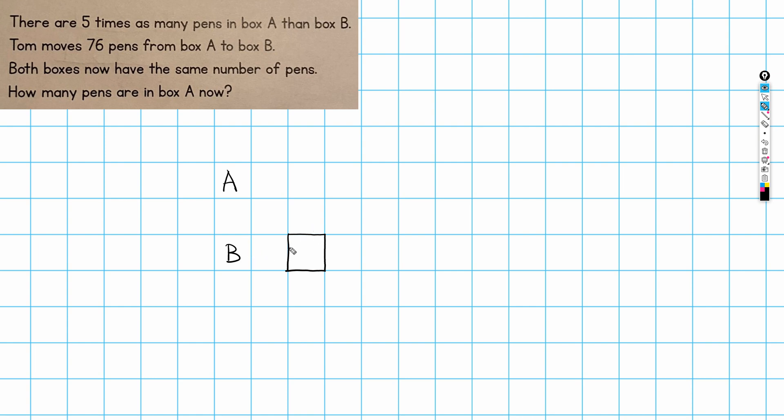I'm going to draw this square here, is going to represent the number of pens in box B. And if there are this many pens in box B, well, we know that box A has five times the number of pens in box B. So I'm going to draw, there we go, that would be one that would represent the same number of pens. But box A has five times. So this is two times, three times, four times and five times.